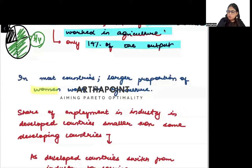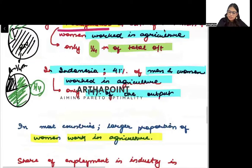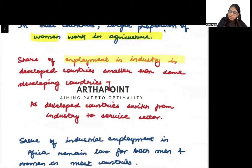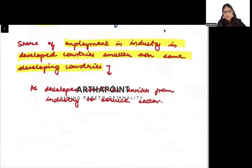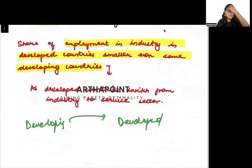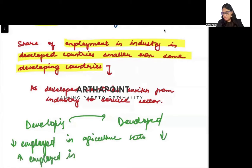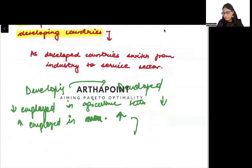In most countries, a larger proportion of women work in agriculture. Among the labor force working in agriculture, more are women than men. As countries develop from developing to developed, the number of people employed in agriculture decreases, those in manufacturing increase, and then people gradually move toward the service sector.